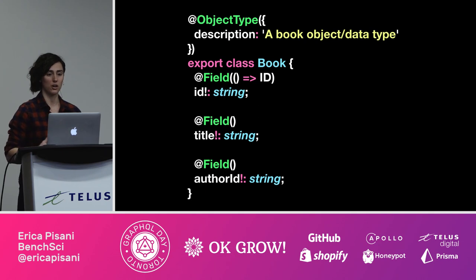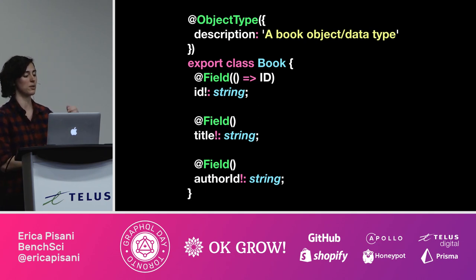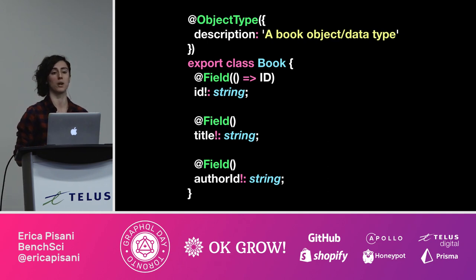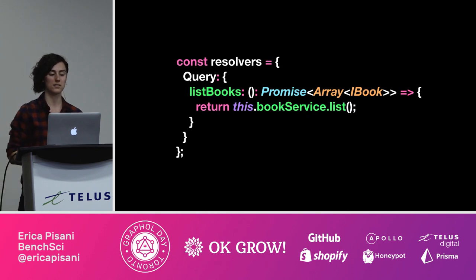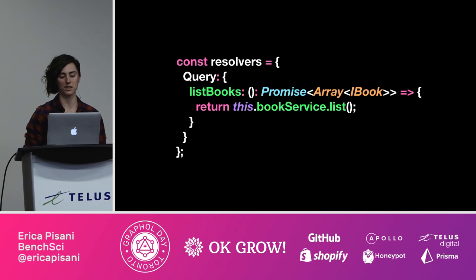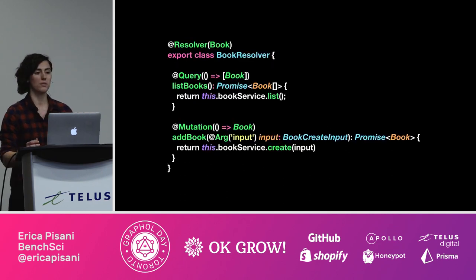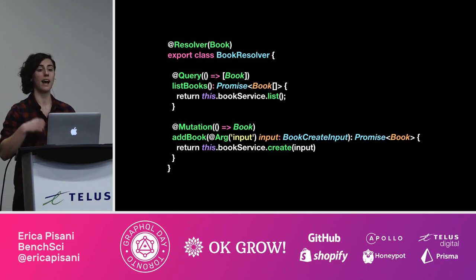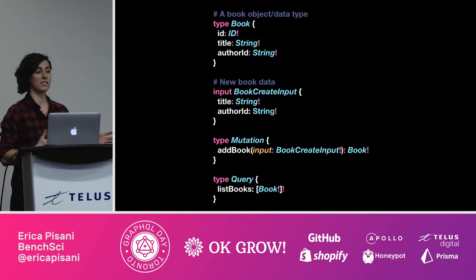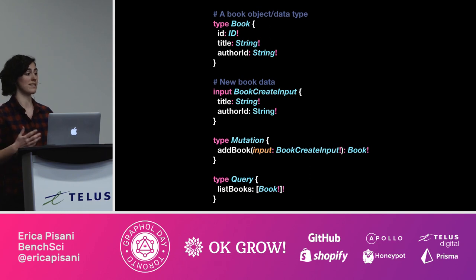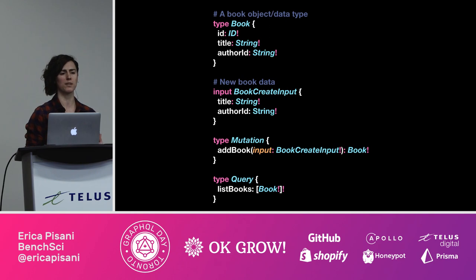Here's a quick example of what that looks like in code. We've got our basic TypeScript class — our book data type — and we're using an object type and field decorator from TypeGraphQL to say that this is a GraphQL type, and I want to expose three fields on the schema: the ID, the title, and the author ID. Where we would normally have a simple resolvers object to list queries and mutations, in TypeGraphQL we have a resolver, query, and mutation decorator that we import and add onto a TypeScript class to automatically generate our resolvers. And then you get a schema that is automatically generated for you by TypeGraphQL at compile time.